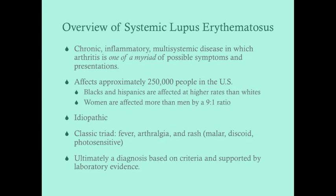The classic triad that lupus presents with is fever, arthralgia or arthritis, and a rash. That's how the USMLE will generally characterize it. They may also include pleurisy, pleuritis, or pericarditis in place of or in addition to one of these symptoms. The rash is usually the malar rash, but it can also be a discoid rash or a photosensitive rash.